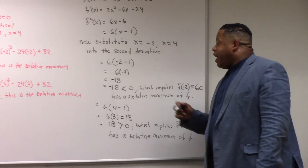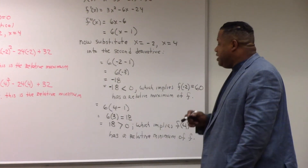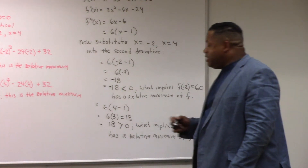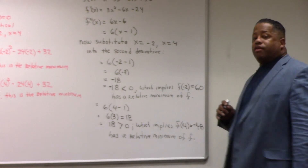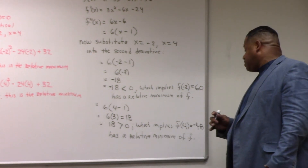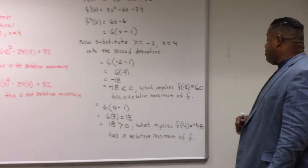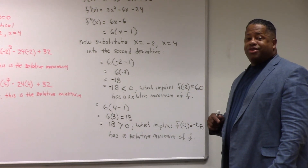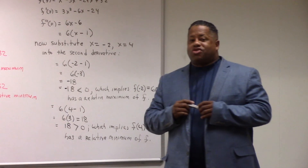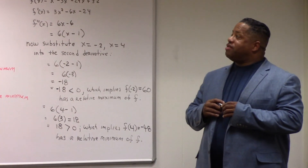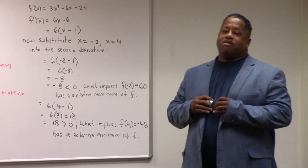As we continue, substituting four into the second derivative, we see that six times three is positive eighteen. Eighteen is greater than zero, which implies that f of four, the relative minimum of negative forty-eight, is confirmed as a relative minimum of f at that point. This concludes our discussion of the relative minimum and maximum, where we applied the second derivative test.